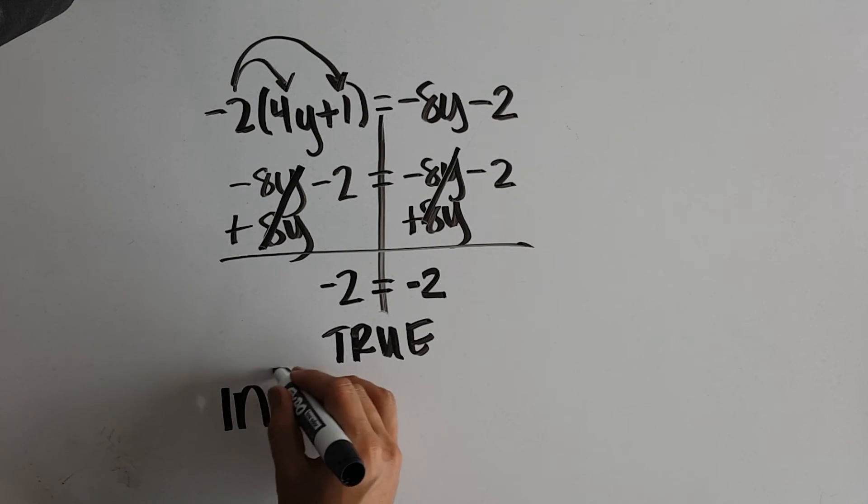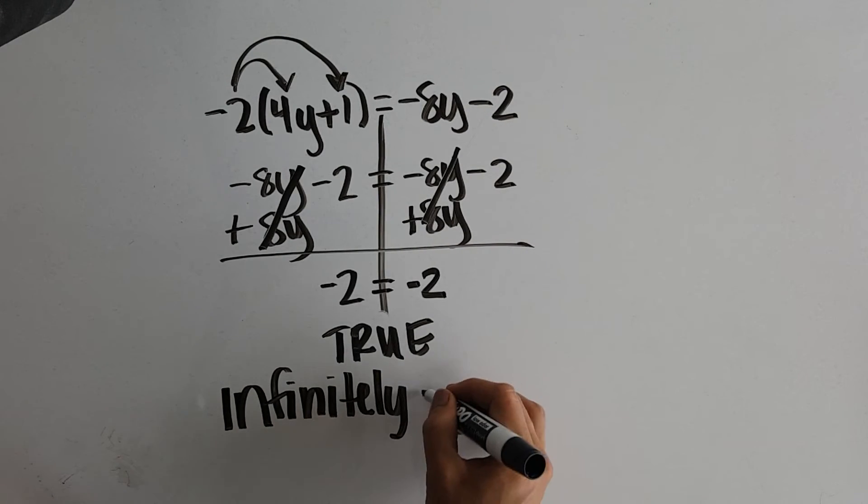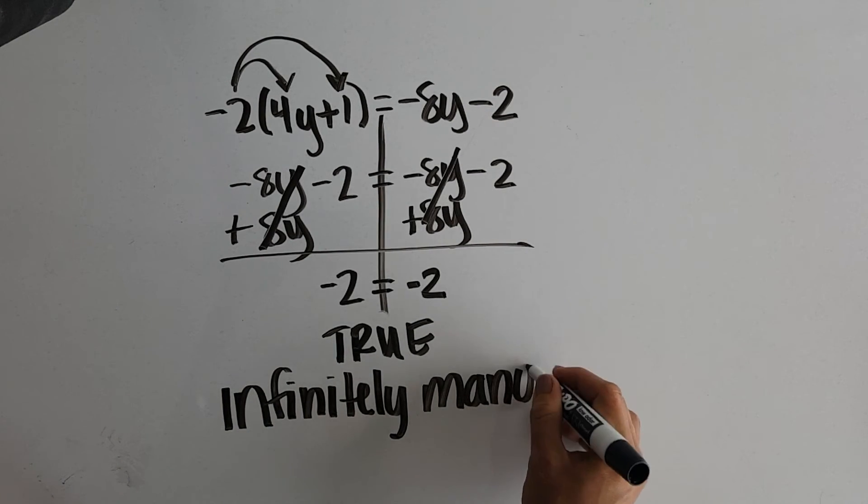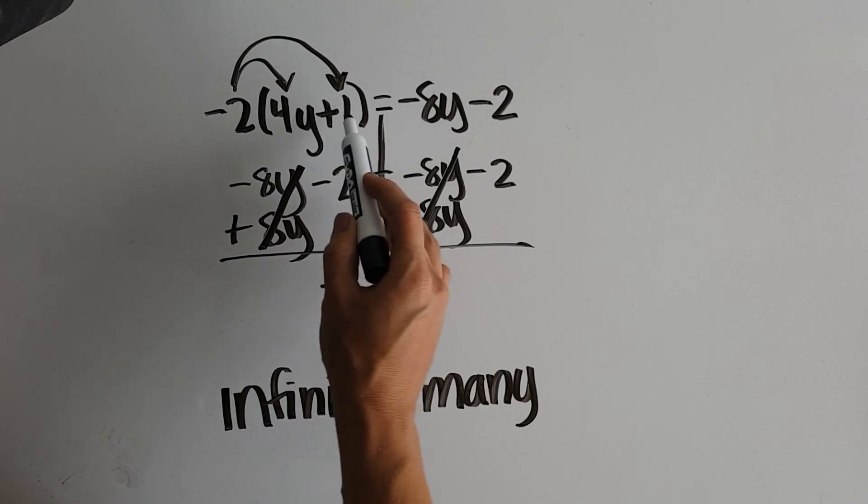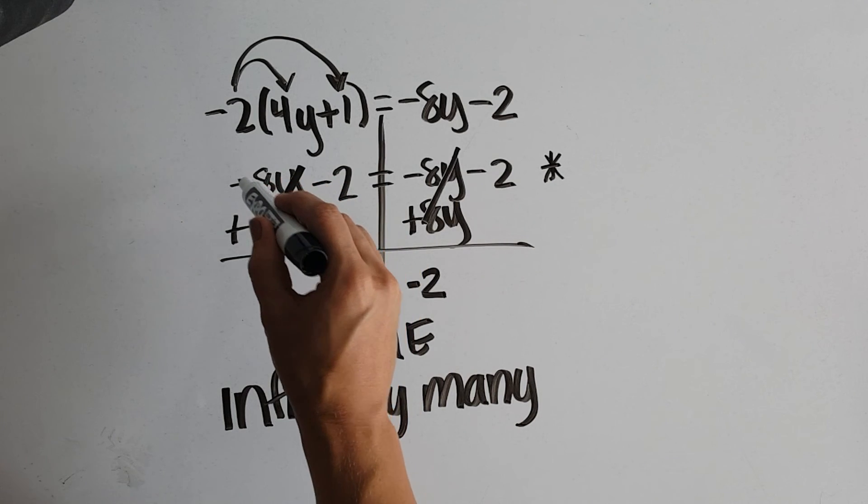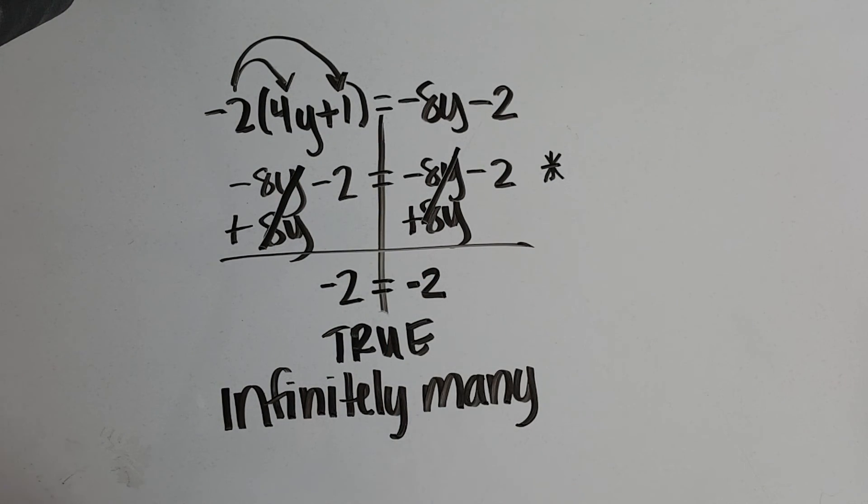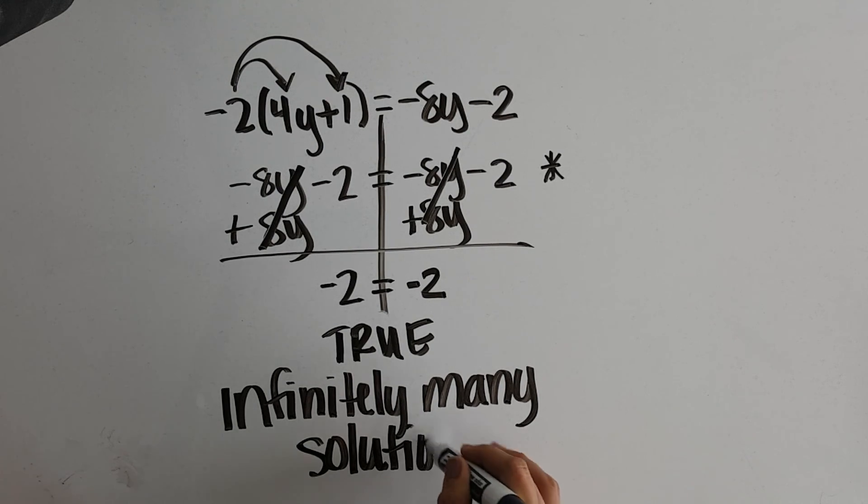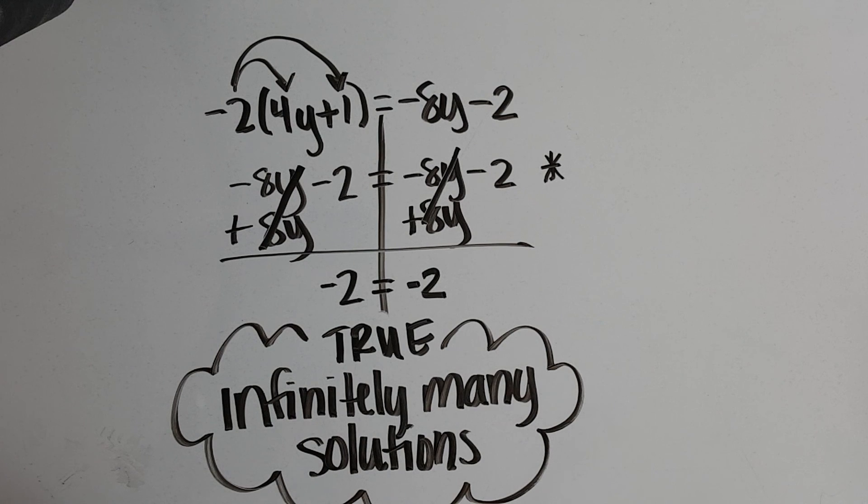Because it doesn't matter what x is, since it's the exact same thing on both sides, which we could actually see right here at this step. It doesn't matter what y is. It's always going to give you the same thing on the left and on the right. You will always end up with a true statement. And that's solving equations with variables on both sides.